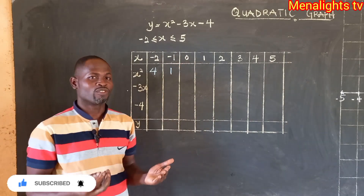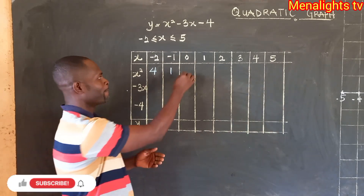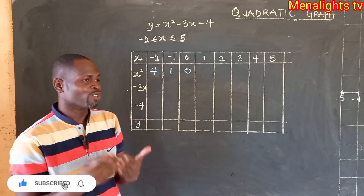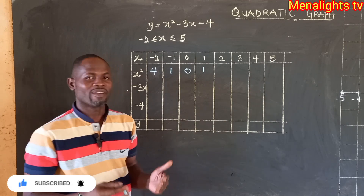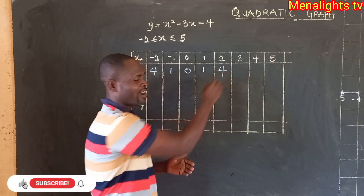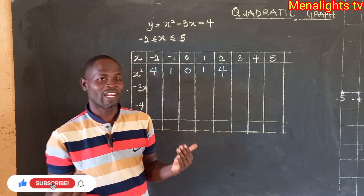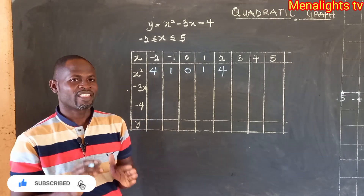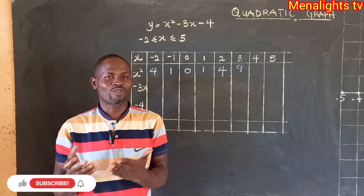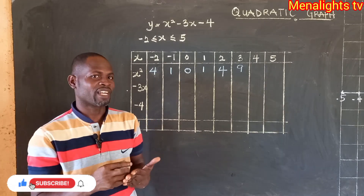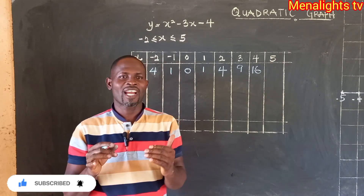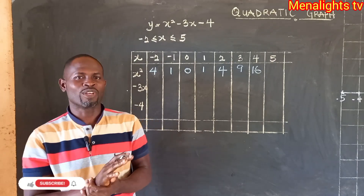If x is equal to 0, the square of 0 is 0. If x is equal to 1, the square of 1 — that is 1 times 1 — you get 1. Then if x is equal to 2, 2 times 2 gives us positive 4. Then 3 squared, that is 3 times 3, gives us 9. Then for x equal to 4, x squared equals 4 squared which gives us 16. And if x is equal to 5, 5 times 5 gives us 25.